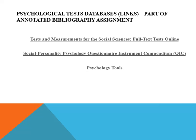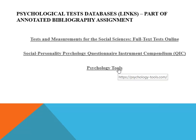Now, the annotated bibliography assignment: some of you may have done annotated bibliographies before. Here the topic will be a psychological test that you select. I provide several links to access psychological tests online — you should not have to pay for any test. Links include: Tests and Measurements for the Social Sciences, Tool Tests Online, the Social Personality Psychology Questionnaire Instrument Compendium, and Psychological Tools. These are ways you can find a psychological test that interests you; you can also do Google searches.